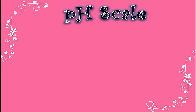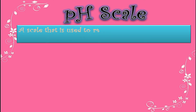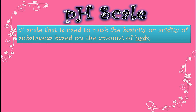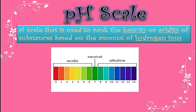Now I will tell you what is the pH scale. A scale that is used to rank or measure the basicity or acidity of substances based on the amount of hydrogen ions. This pH scale tells you whether any substance is acidic or basic. It starts from 0 to 14. Values from 0 to 6 are of acids — if any substance has a pH value of 0 to 6, that substance is considered an acid.